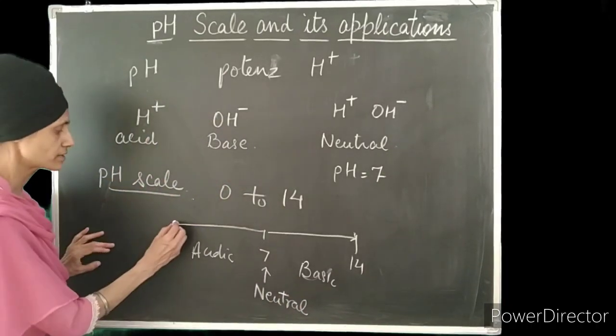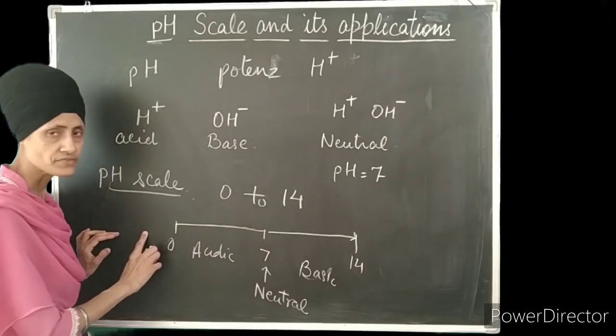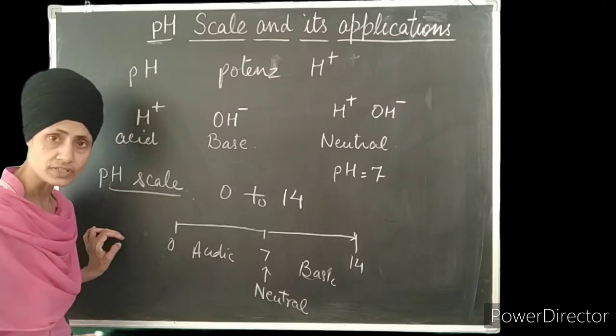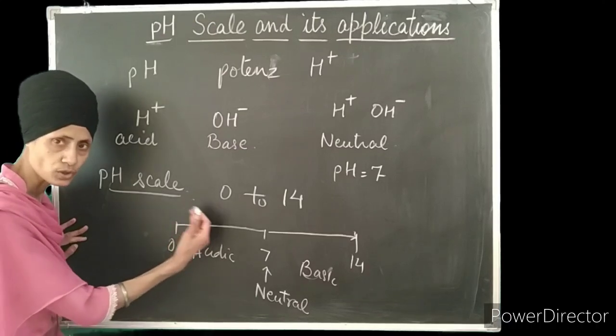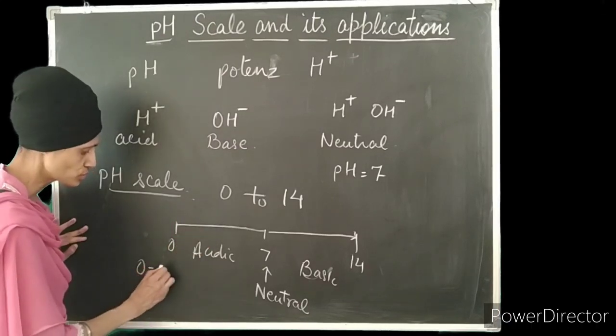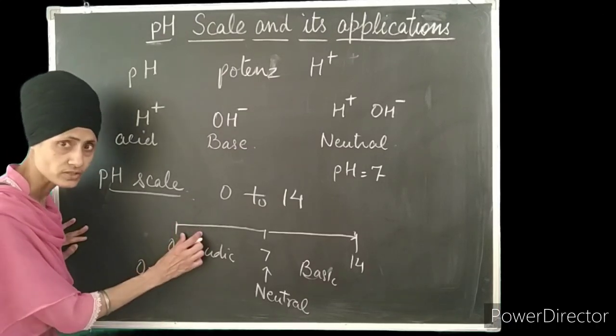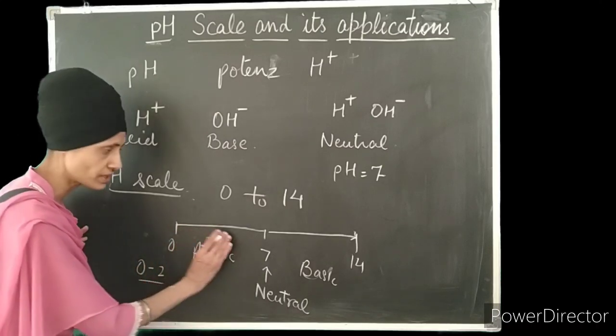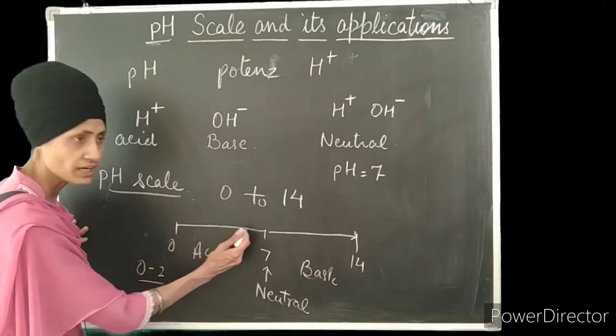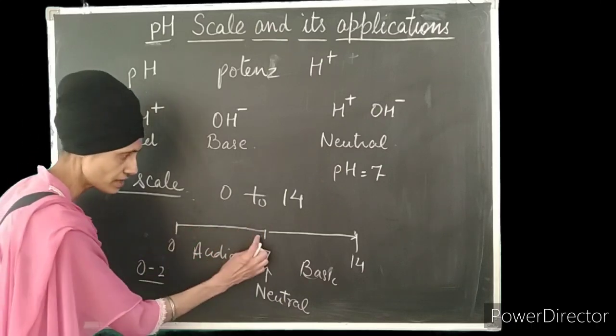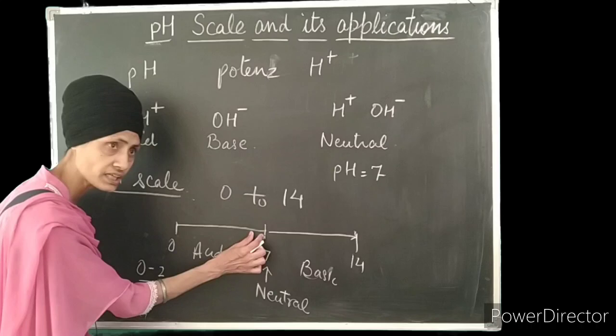So here on the extreme left, solutions which have pH value 0 to 2 are very strong acids. As the value of the pH increases up till 7, the acidic strength will become less and less. Here near about 7 we have weak acids.